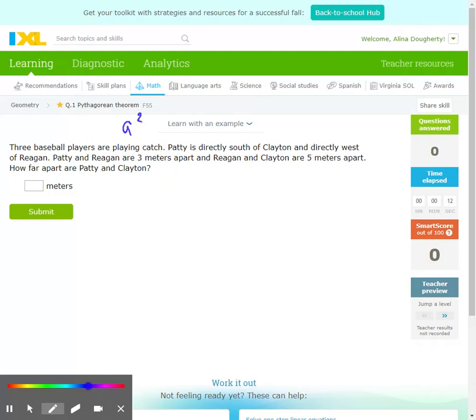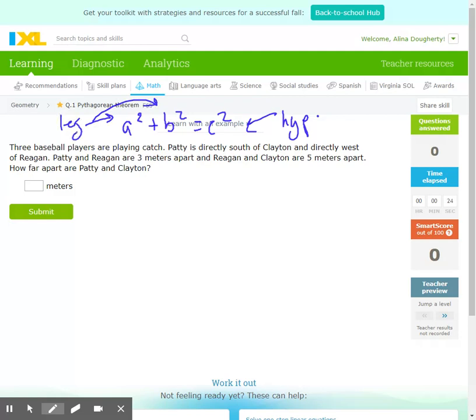Remember, Pythagorean Theorem is A squared plus B squared equals C squared, where C is the hypotenuse, it's always the longest side, and A and B are the legs, they form the right angle. So A squared plus B squared equals C squared.